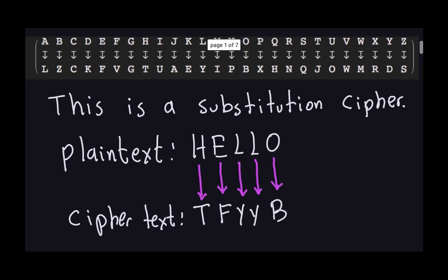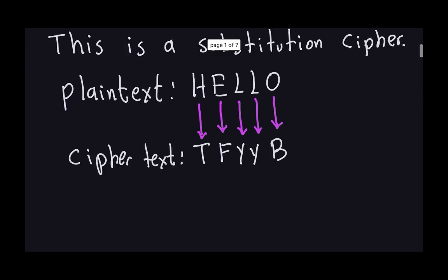One problem with the substitution cipher is that you have to keep a lot of information at hand. With the Caesar cipher, the key is very simple — just a shift number, like 'shift of four,' and that tells you exactly what to do. With the substitution cipher you have to store the entire mapping table. There is a way to make this shorter using number theory, but we haven't covered that yet.